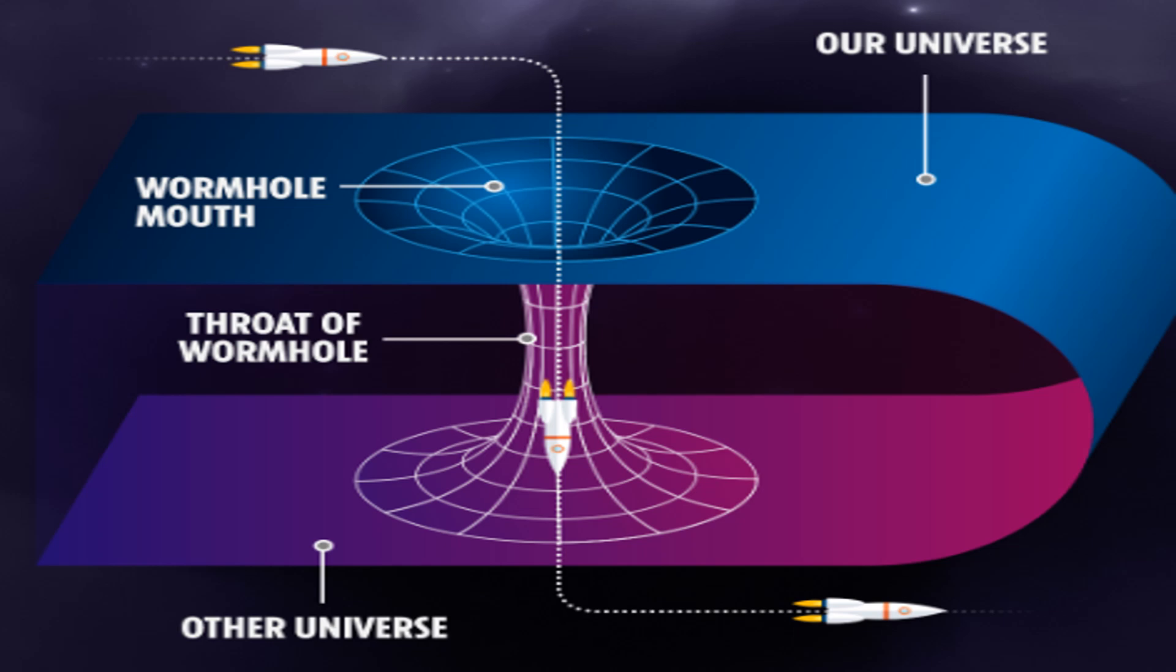The simplest type of wormhole, known as the Einstein-Rosen Bridge, was proposed by Albert Einstein and Nathan Rosen in 1935. This solution connects two separate points in space-time via a tunnel-like structure. However, this type of wormhole is unstable and would collapse too quickly for anything to pass through it.